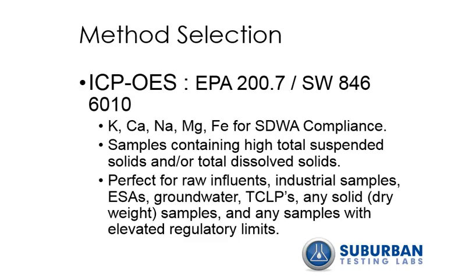So how do we select which method to use when running your samples? The ICP-OES for methods 200.7 or 6010 is mainly for samples containing high total suspended solids and/or total dissolved solids, because it is a more rugged instrument. There are certain methods not approved via ICP-MS for SDWA compliance, including potassium, calcium, sodium, magnesium, and iron. This instrument is also ideal for raw influent, industrial samples, environmental site assessments, groundwaters, TCLP samples, any solid dry weight sample, and any sample with elevated regulatory limits.